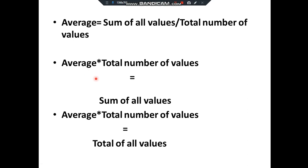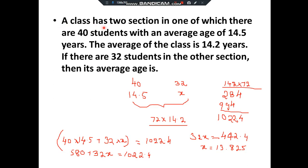Let's start with the first question. A class has two sections. In one of which there are 40 students with an average age of 14.5 years. The average age of the class is 14.2 years. If there are 32 students in the other section, find its average age. Understand the question carefully. Let us consider the two sections as A and B. Section A has 40 students with average age 14.5. The class average — that is A plus B together — is 14.2 years.